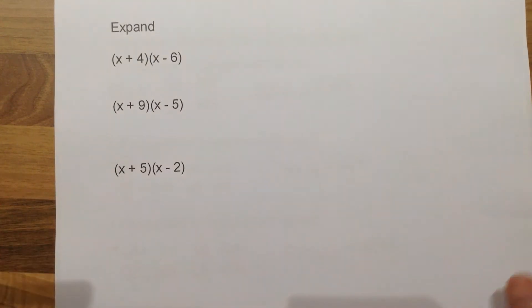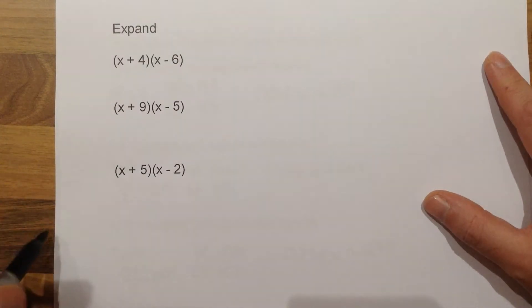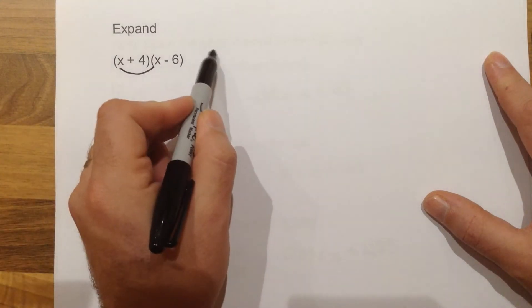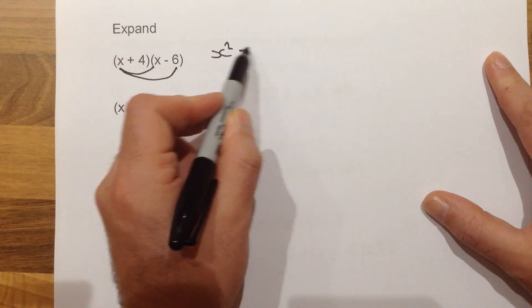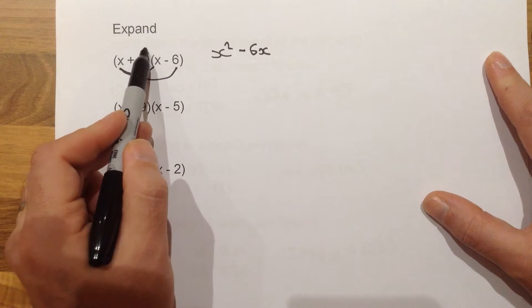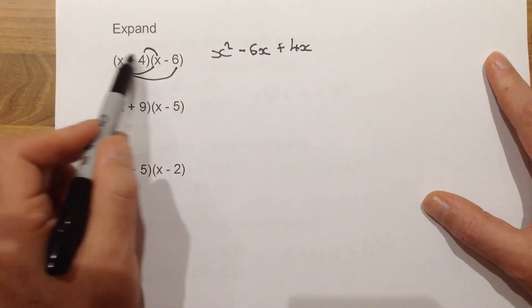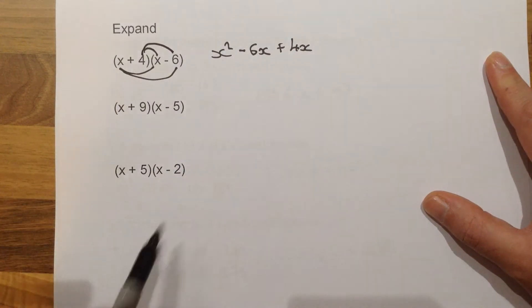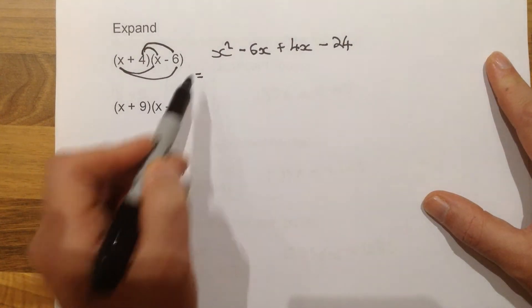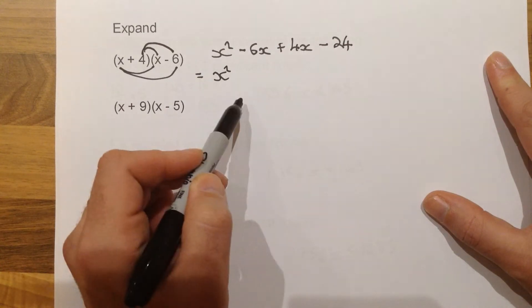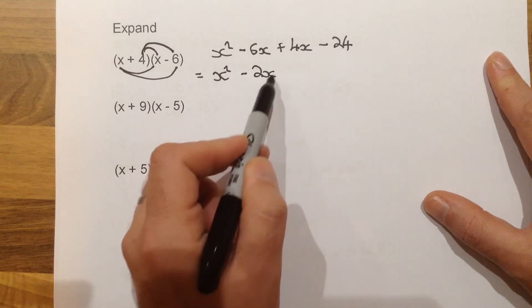The next topic is asking us to expand some double brackets. This is something we've done quite a lot on recent homework, so you should be quite good at this now. So we've got X times X to give us X squared. X multiplied by minus 6, so minus 6X. And then 4 times X. Notice 4 is positive. So it's plus 4X. And then positive 4 times negative 6, so minus 24. This would give us one mark. For the second mark, we can then simplify, giving us X squared minus 2X and then minus 24.